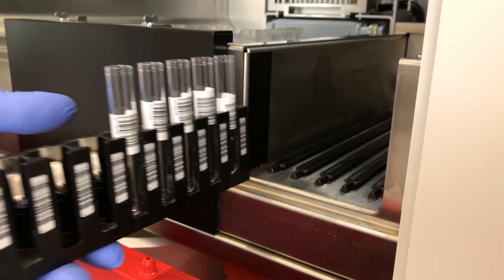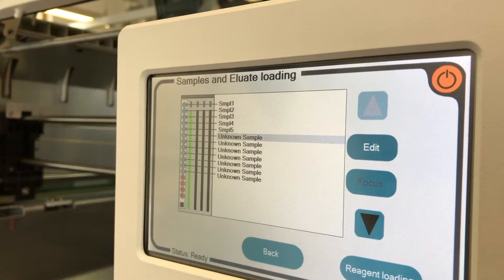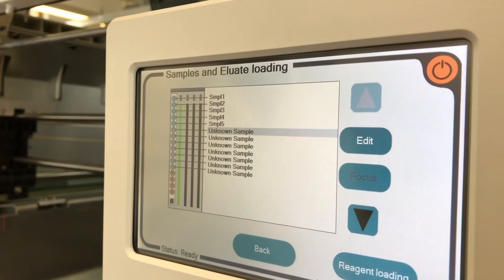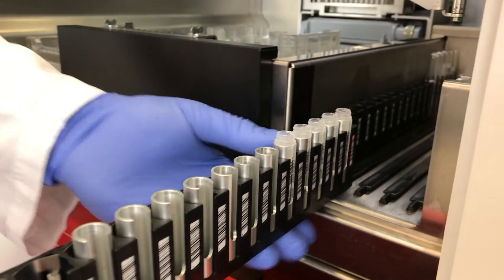Load samples to the loading bay equipped with a barcode scanner. Barcoded samples are detected and displayed. Load eluate tubes to the loading bay.